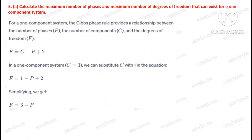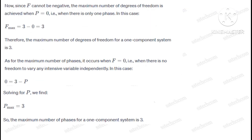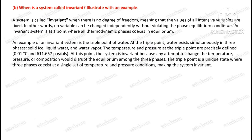Question number five, first part: Calculate the maximum number of phases and maximum number of degrees of freedom that can exist for a one-component system. Second part: When is a system called invariant? Illustrate with an example.